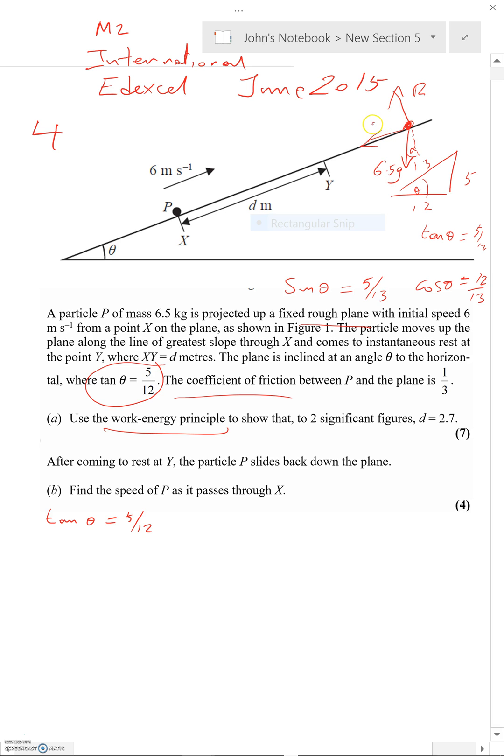We've got the angle theta here, and the weight of this particle we're told is 6.5g. So we can say, if we resolve perpendicular to the slope, the forces have to be balanced here, so we have R equals 6.5g cos theta. You can see where I'm going with this because cos theta is 12 over 13, so I haven't even had to reach for the calculator at some point.